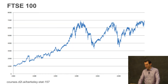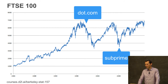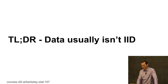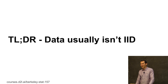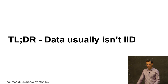This is the obvious one: stock price over time. You can see the FTSE 100 dot-com bust took the index down, then there was subprime, and who knows what's next. This is decidedly non-stationary. TLDR: data usually is not IID. Almost always, IID is just a simplification. If you can deal with the fact that data isn't IID, your model will typically get better.